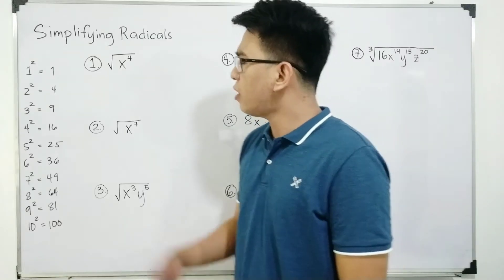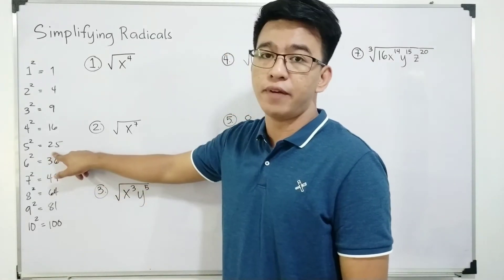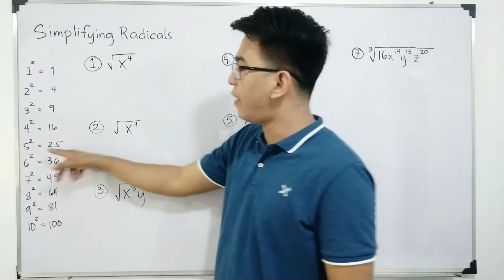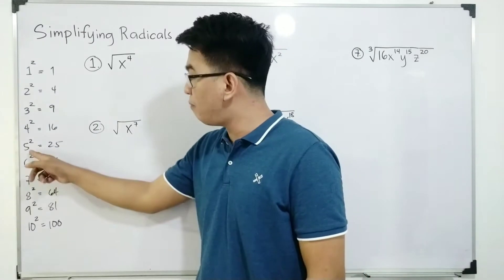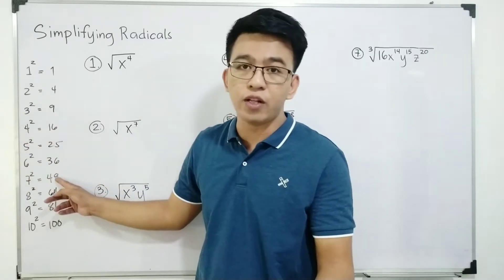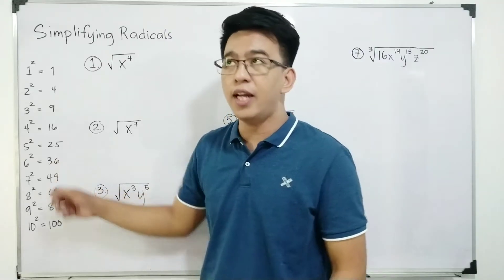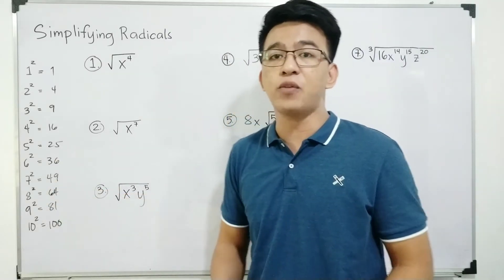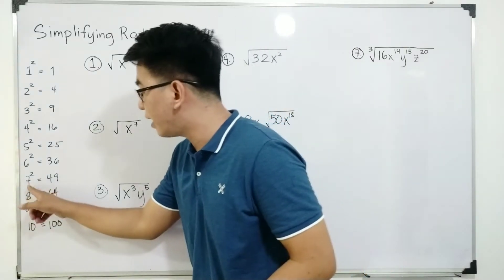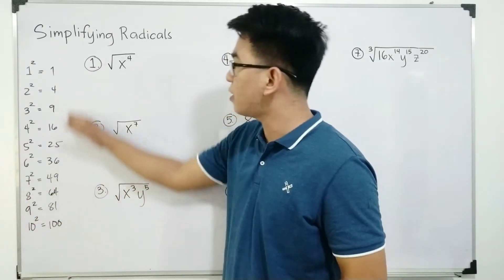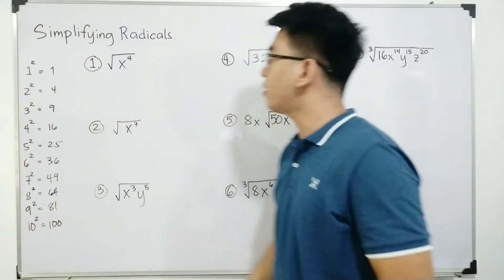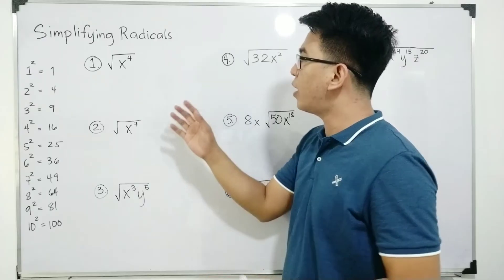Why is it important? If you encounter the square root of 25 and you know that this is a perfect square, you can easily identify that the square root of 25 is simply the base, which is 5. Same with 49 — 49 is a perfect square and is the result of 7 squared, so the square root of 49 is 7. Let's start simplifying radicals.